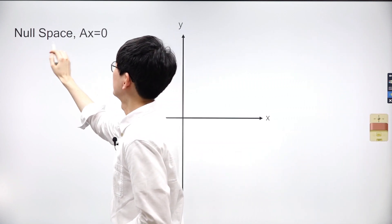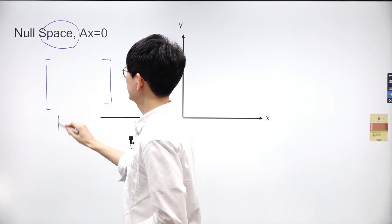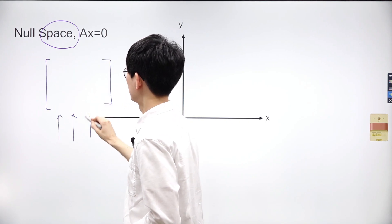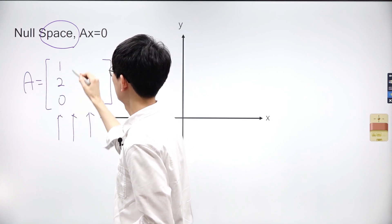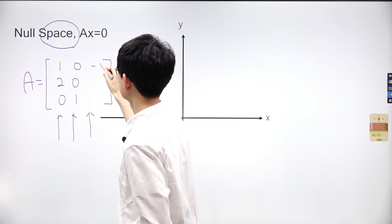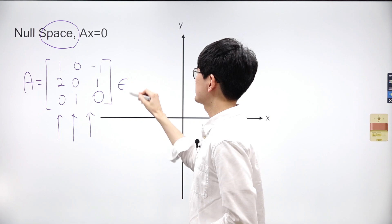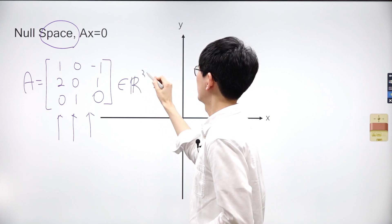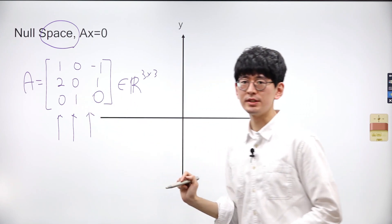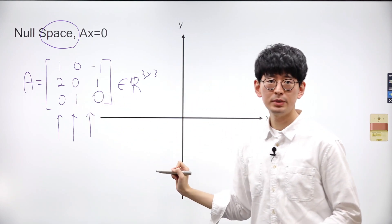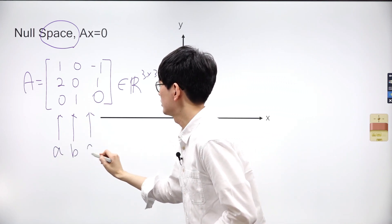Let's suppose we have a matrix or collection of vectors denoted as A. There are three vectors inside the matrix: 1, 2, 0; 0, 0, 1; and negative 1, 1, and 0. Matrix A is a 3 by 3 matrix. Now let's determine if each vector in the matrix is linearly independent and capable of spanning three-dimensional space. We'll label each vector A, B, and C respectively.